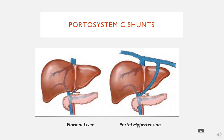This shows what they look like. In a normal liver, the portal vein comes up and goes into the liver, through the liver, and then into the IVC. In an abnormal liver, where there is portal hypertension and a lot of pressure, the blood finds another way and bypasses the liver.